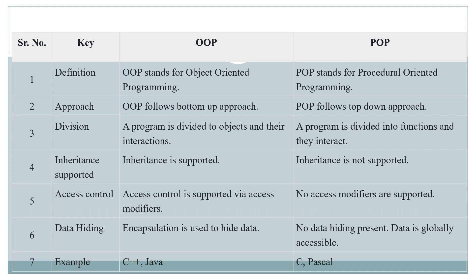The last point is examples. Examples for object oriented programming are C++, Java, VB, C sharp, Python, and .NET. Examples for procedural oriented programming are C and Pascal.